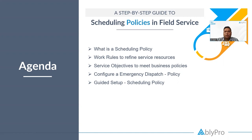Scheduling policies are made of two elements: work rules and service objectives. Work rules refine the list of candidates for a service appointment by rejecting service resources that don't meet the rules — it's an elimination process where you select service resources that are eligible to perform the work. Service objectives represent scheduling goals. You can give ratings to each objective and give them more or less importance per your business needs, and as we go along in the demo, that'll make sense.